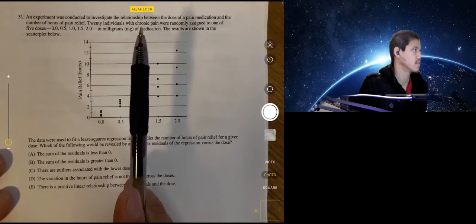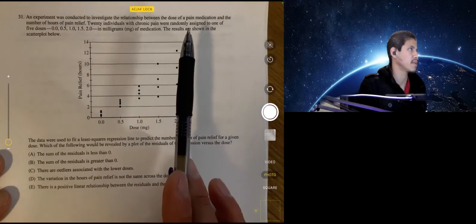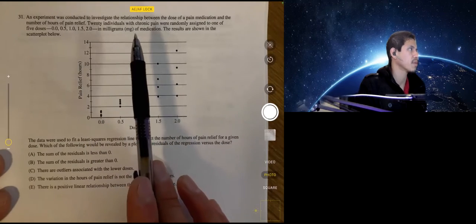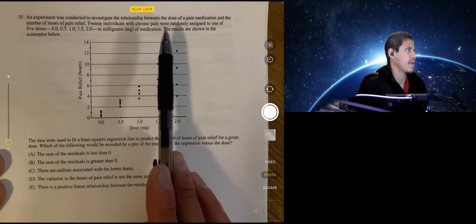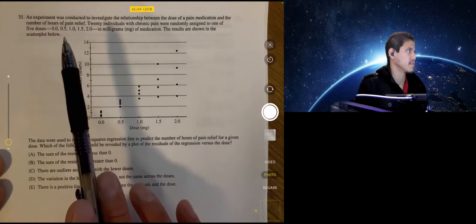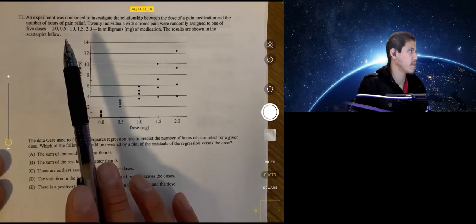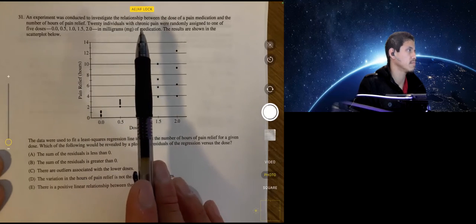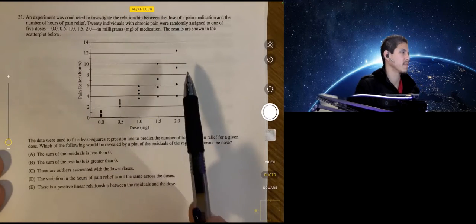All right, so we have an experiment that was conducted to investigate the relationship between the dose of pain medication and the number of hours of pain relief. Twenty individuals with chronic pain were randomly assigned to one of five doses: 0.5, 1, 1.5, and 2 in milligrams medication. The results are given in the scatter plot.